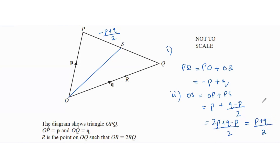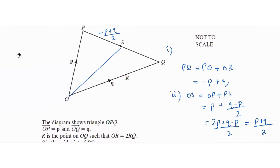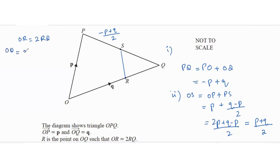Now find SR. We're told OR is twice RQ, and OQ = q. So OR = (2/3)q and RQ = (1/3)q. We need to find SR, which we'll calculate using SQ and QR.